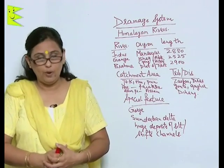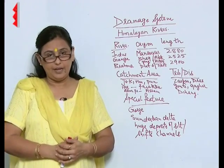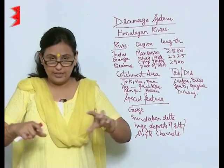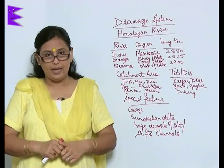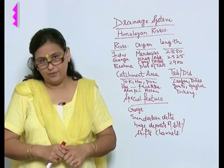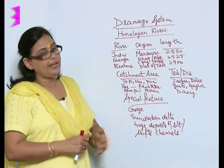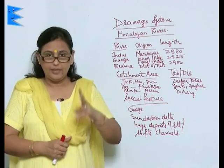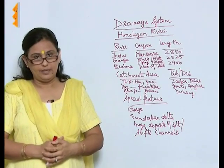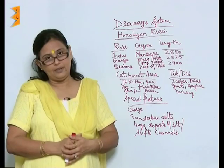The rivers which flow — we need to understand where they originate, where they flow, what the length of the river is, and how it helps the country. When we talk of the drainage system in India, there are basically two divisions: the Himalayan rivers and the peninsular rivers.